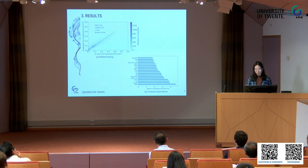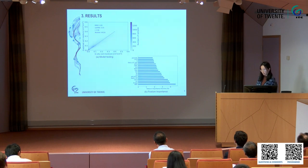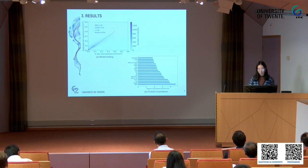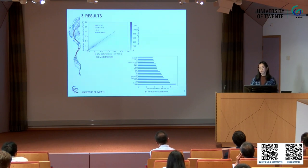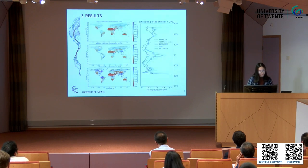From the feature importance, we can see APEI — the Antecedent Precipitation and Evaporation Index — is the most important feature. APEI can reflect the influence of historical precipitation and evaporation on the current day's soil moisture.